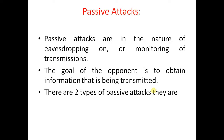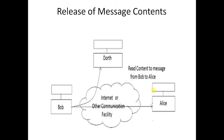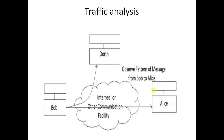There are two types of passive attacks. The first is release of message content — reading the content of a message from Bob to Alice via the internet or other communication facilities. The second is traffic analysis — observing the pattern of messages from Bob to Alice and Bob to others via internet or other communication facilities.